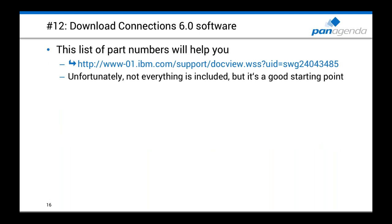Tip 12: Downloading Connections software. When installing Connection 6, use the IBM tech note that provides a list of all part numbers for the required software — it's a good starting point. Note that fix packs and other items on Fix Central don't have part numbers and aren't included in the tech note, but it covers the main software downloads.